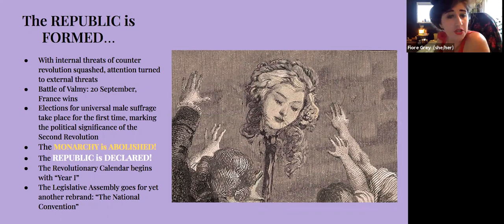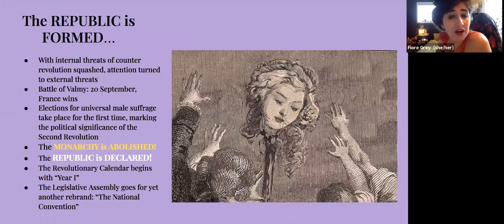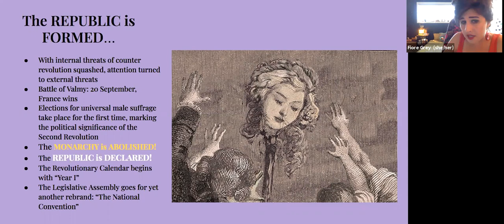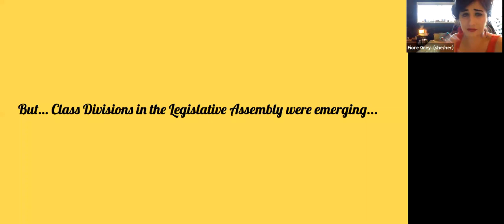With internal threats of counter-revolution temporarily squashed, attention turned to external threats. The Battle of Valmy on the 20th of December was decisive — France won. Elections with universal male suffrage took place, marking the political significance of the Second Revolution. The monarchy was abolished, the Republic was declared, the revolutionary calendar began with Year One, and the Legislative Assembly rebranded again as the National Convention.